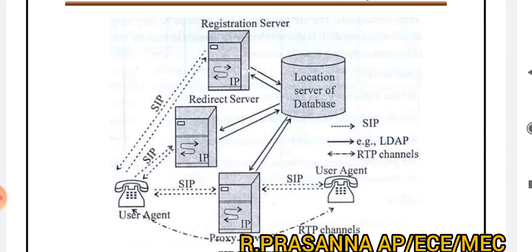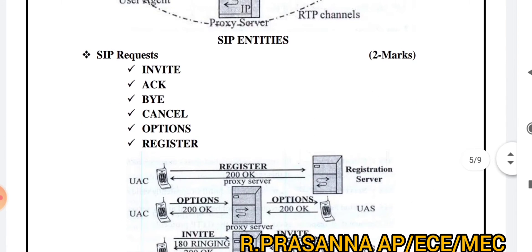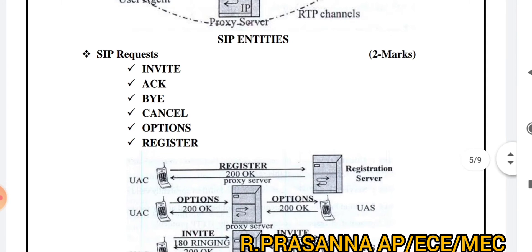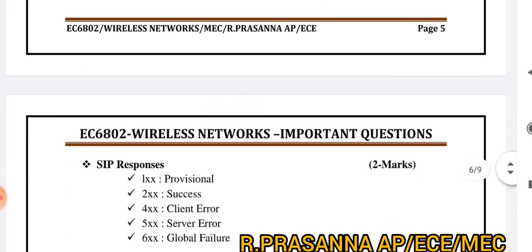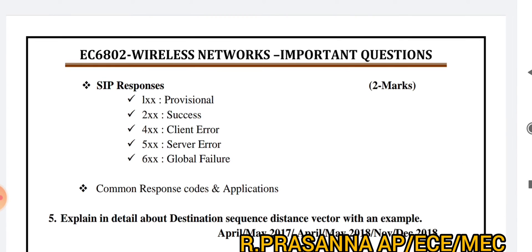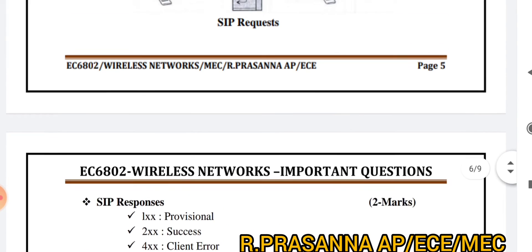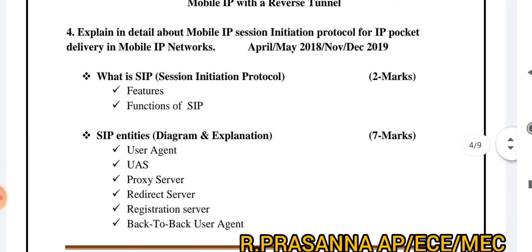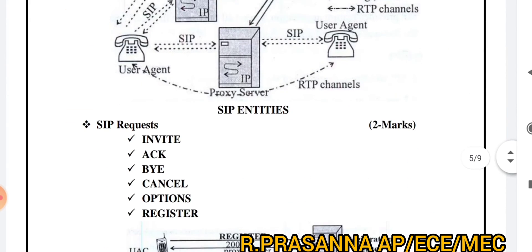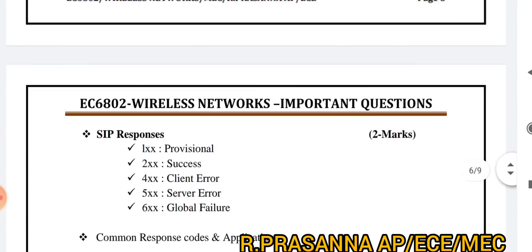Then look at SIP Requests and SIP Responses — you can understand from the name itself. For example, INVITE and ACK are request types. For responses, there are different response codes and error messages. Mark split-up: SIP definition and features is 2 marks, Entities are 7 marks, SIP Requests are 2 marks, SIP Responses are 2 marks. Total: 13 marks.